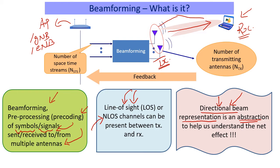Remember, real signals bounce off all kinds of things in between. Another question I get is: are the antennas special by themselves when we do beamforming? Not necessarily. In many Wi-Fi APs, you can have reasonably low-cost omnidirectional antennas, and you can have a variety of antenna structures.